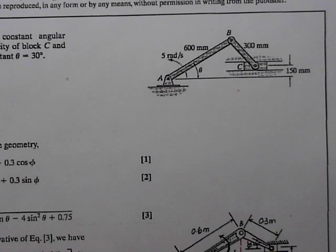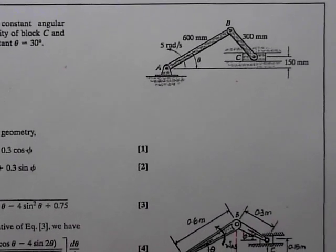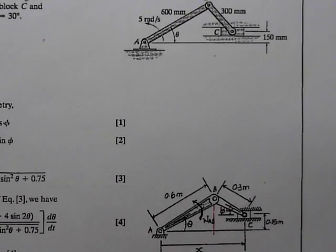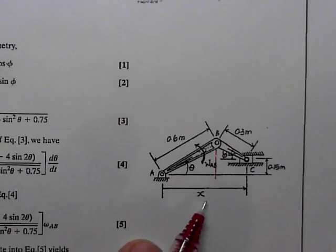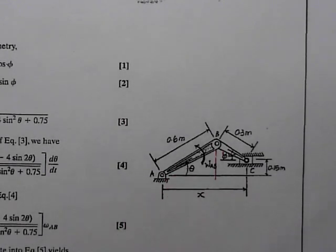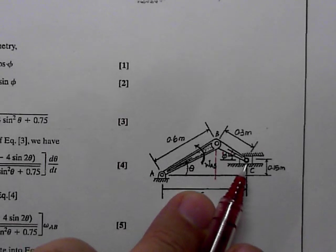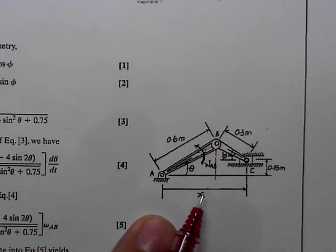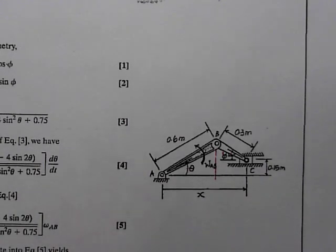The author solves this problem using what he calls the absolute method. What you do with the absolute method is define a position vector for the variable you want to solve for, write an equation that's always true, and then take derivatives of that equation. Since x is the location of C, the derivative of x with respect to time is the velocity of C, and the second derivative would be the acceleration of point C.